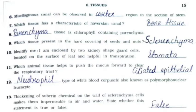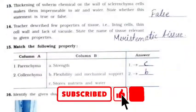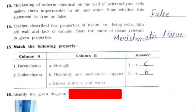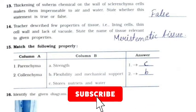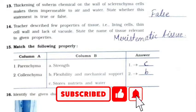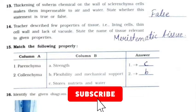Question 10: Identify me - I am enclosed by two kidney-shaped guard cells, located on the surface of a leaf, and helpful in transpiration. Answer: stomata. Question 11: Which animal tissue helps to push mucus forward to clear the respiratory tract? Answer: ciliated epithelial tissue. Question 12: Neutrophil type of white blood corpuscle is also known as polymorphonuclear leukocyte.